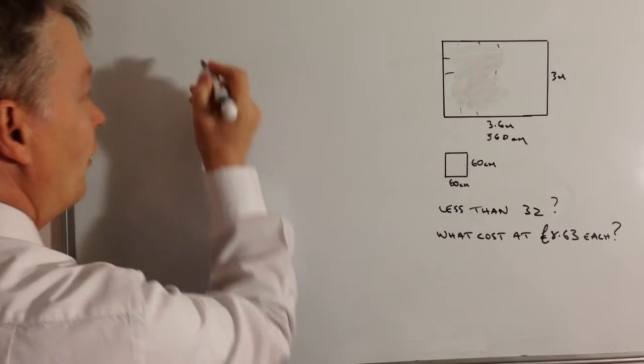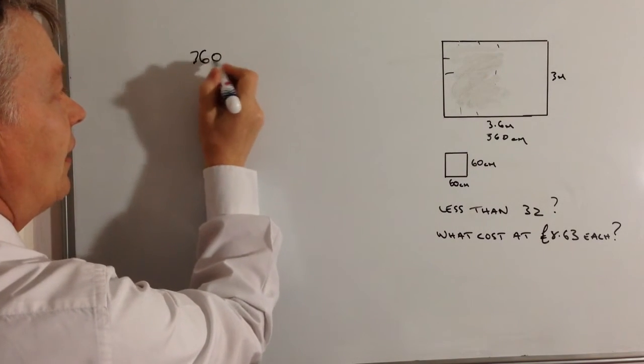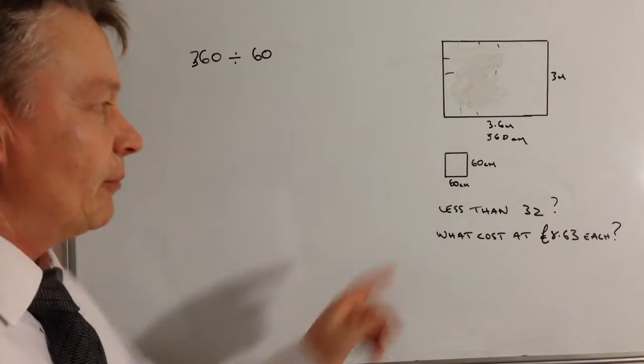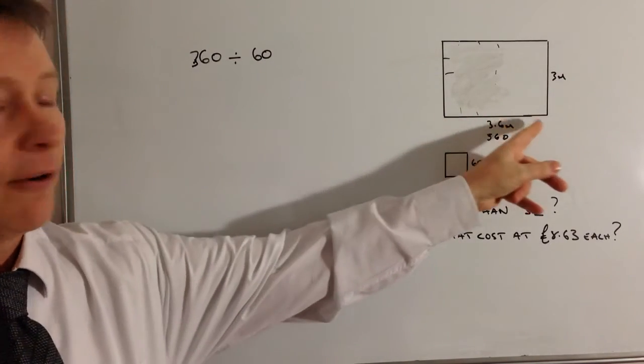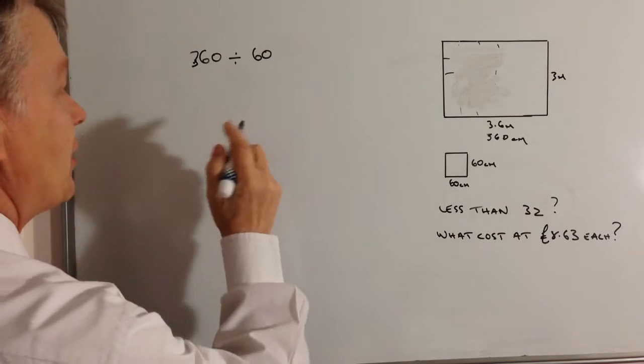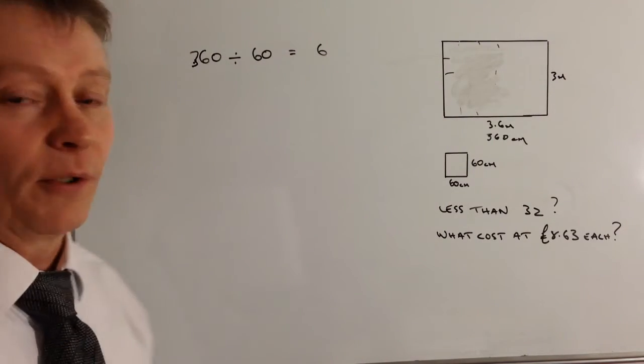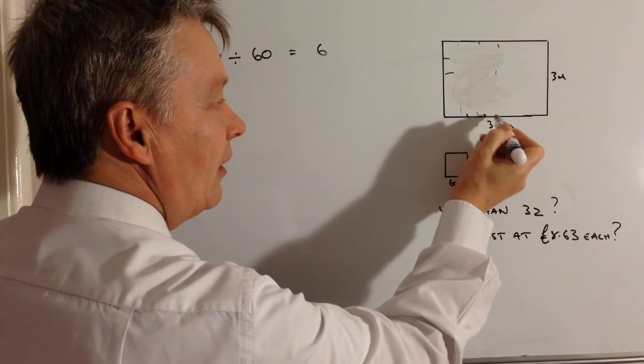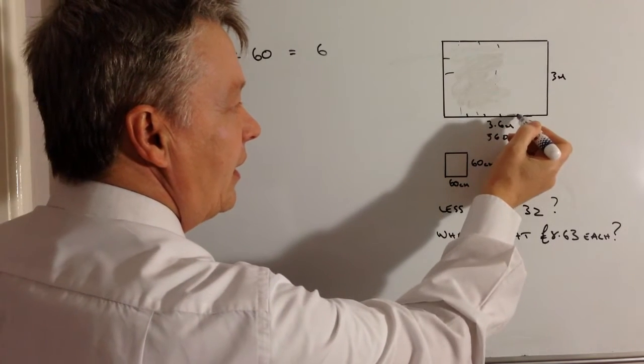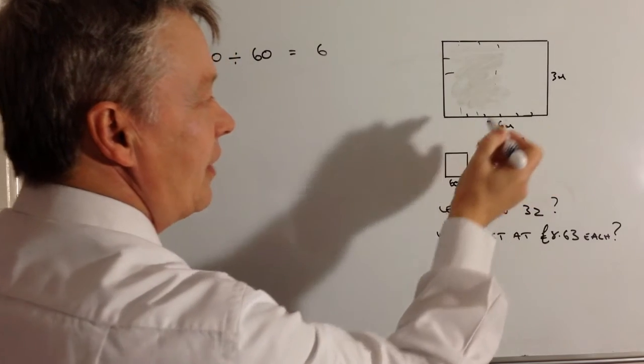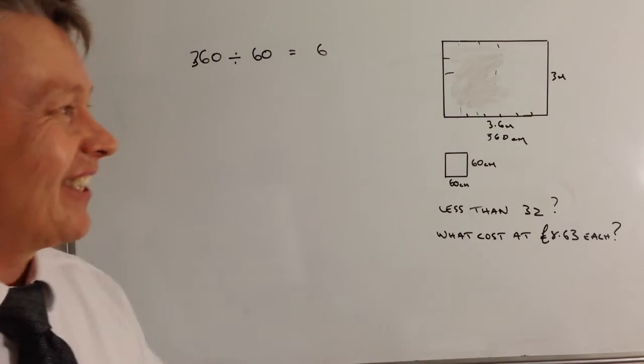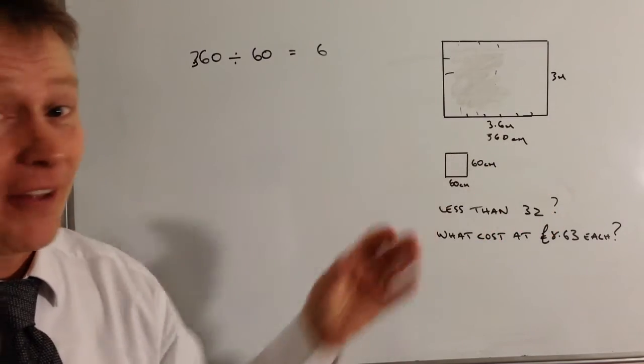So along the bottom I've got 360 and that's going to be divided by 60, in other words how many of these 60s will go into this bottom here. Well 360 divided by 60 is 6, so in other words I can fit six of these slabs along the bottom here. That's 1, 2, 3, 4, 5, 6. Okay, so I can definitely fit those in the bottom there, that's great.